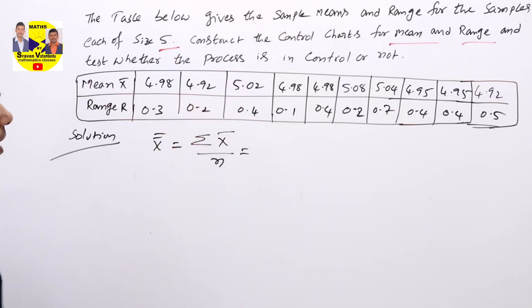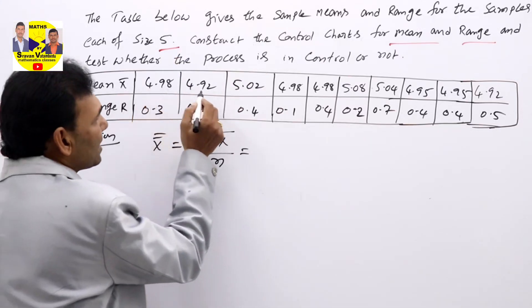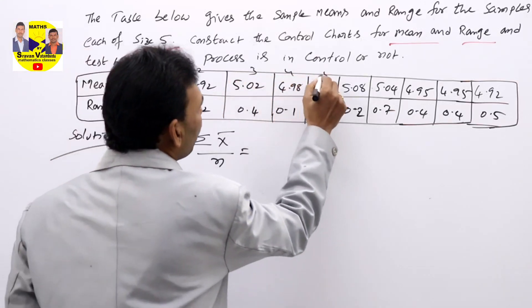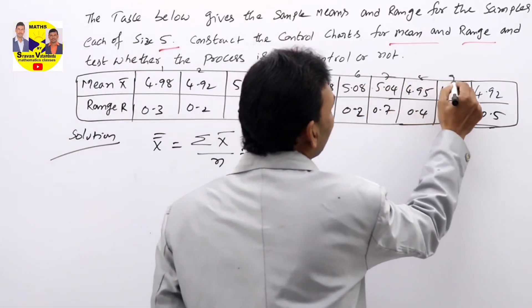Sum of all X bar values. For example, if you treat this one as sample 1, sample 2, sample 3, and so on—if you denote 1, 2, 3, 4, 5, 6, 7, 8, 9, 10.